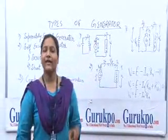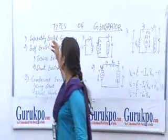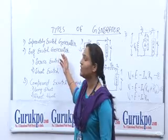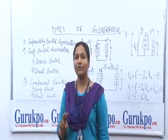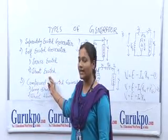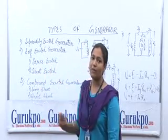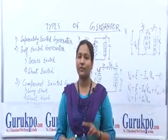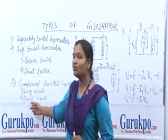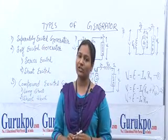Basically there are three types of generator. The first one is separately excited generator. The second one is self-excited generator. Self-excited generator is again subdivided into two categories: series excited and shunt excited. The third one is compound excited generator, which is again subdivided into two categories: long shunt and short shunt. This division is based on the excitation of the generator.